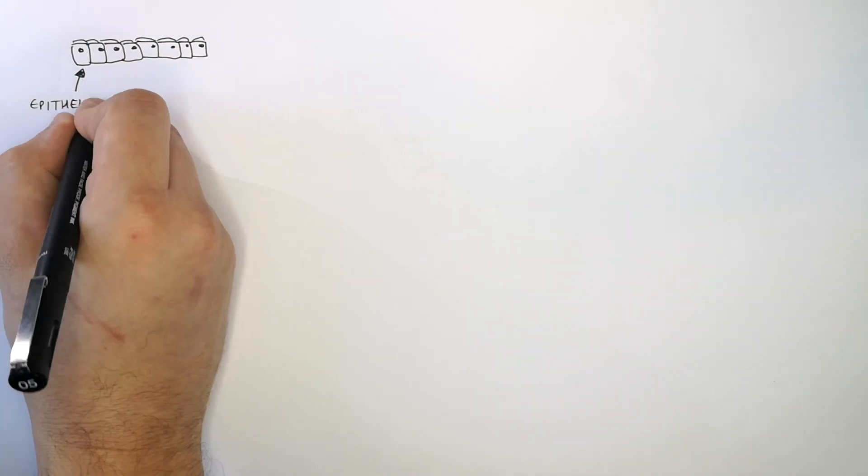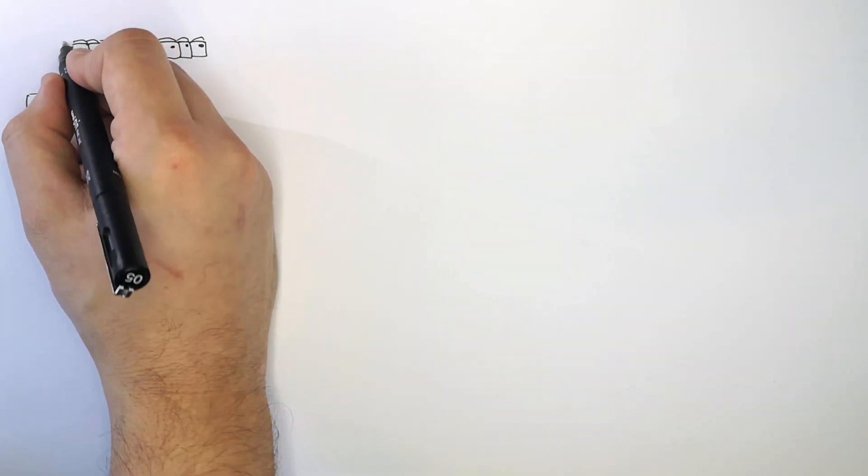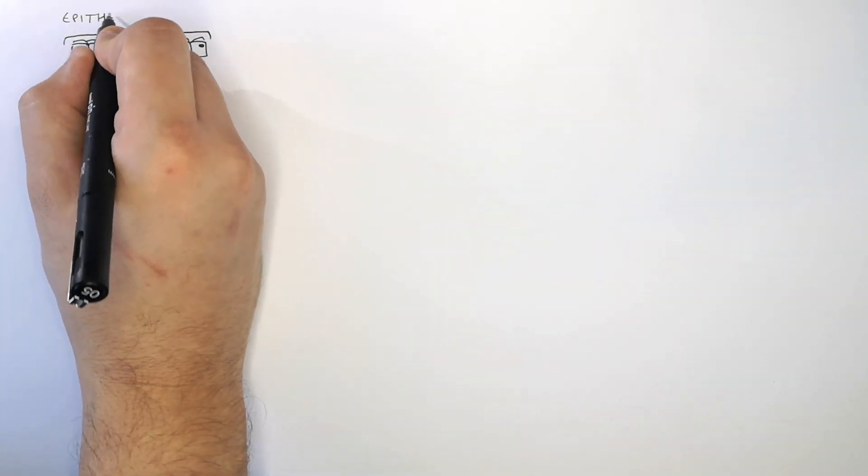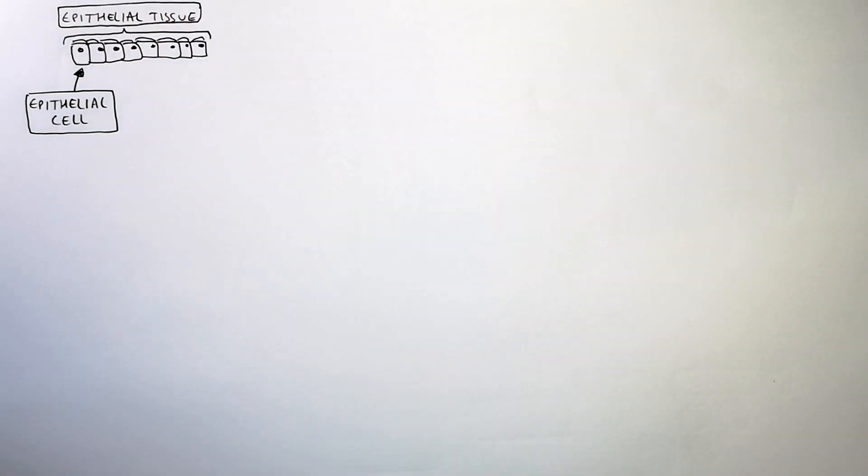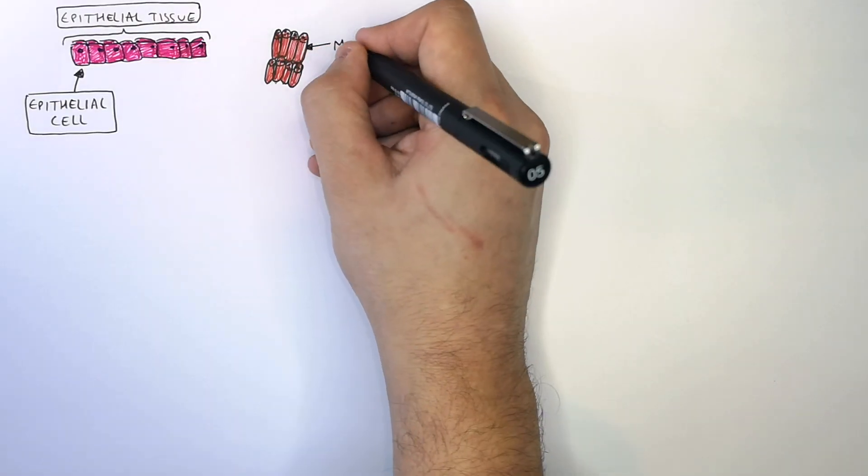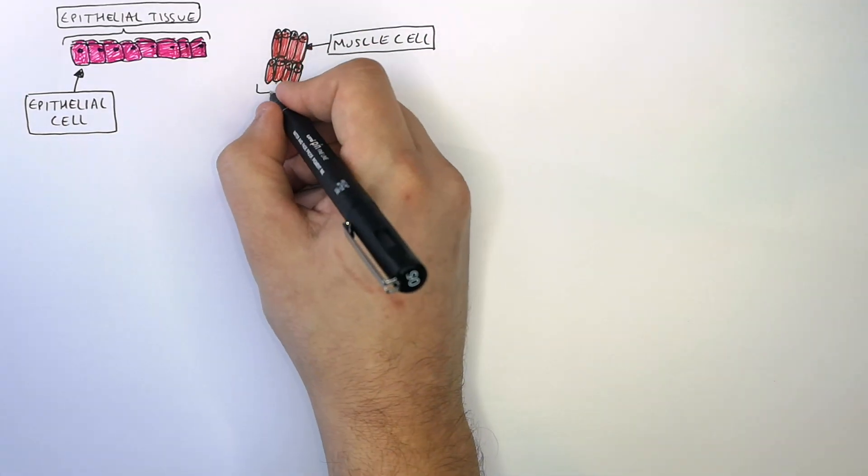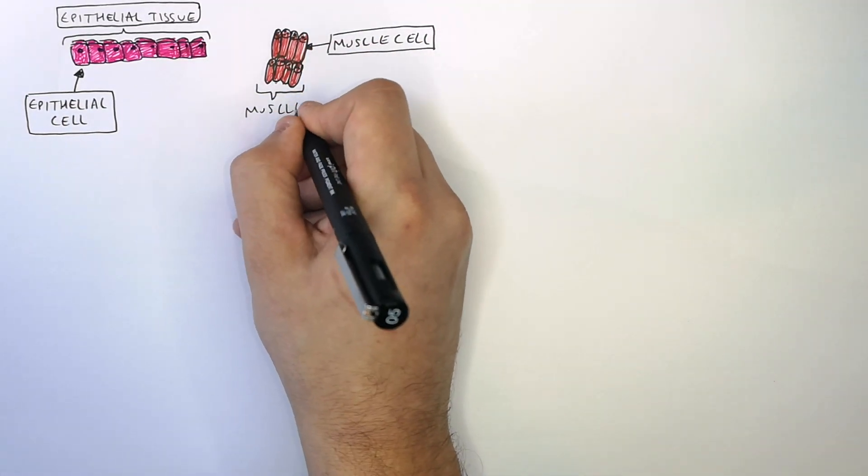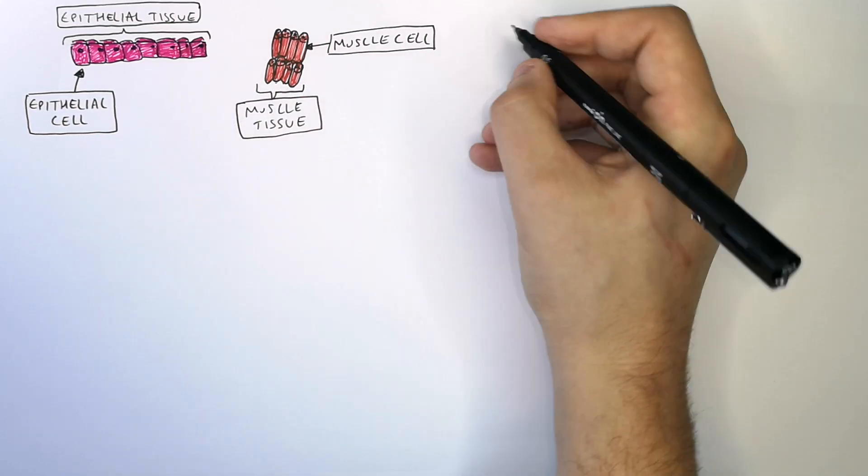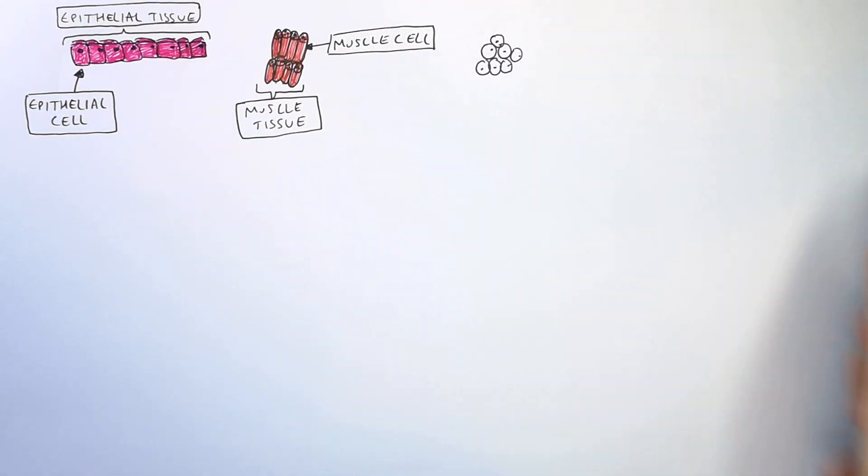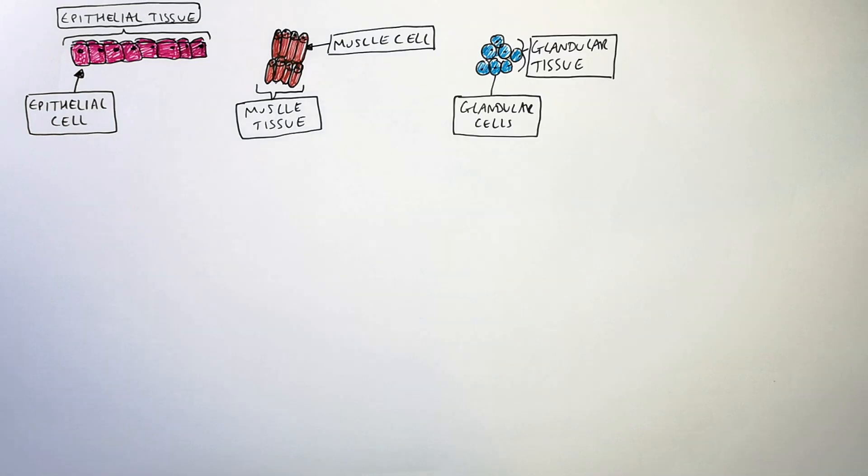Each of these cells are epithelial cells, and a collection of epithelial cells is called epithelial tissue. Each of these cells is a muscle cell. A collection of muscle cells is called muscle tissue. Each of these cells are glandular cells. Together they form glandular tissue.